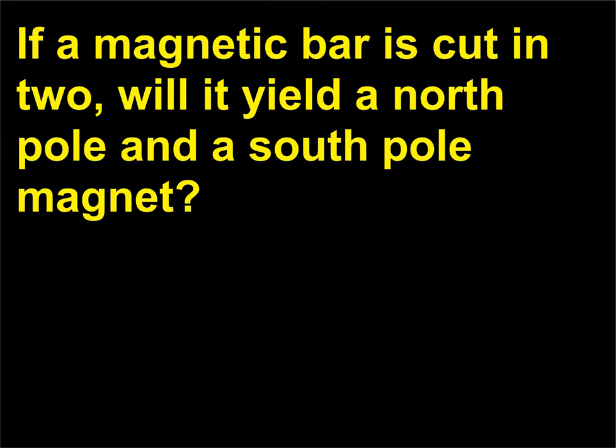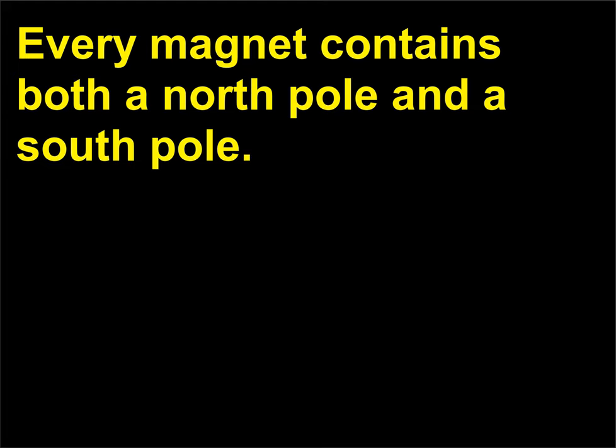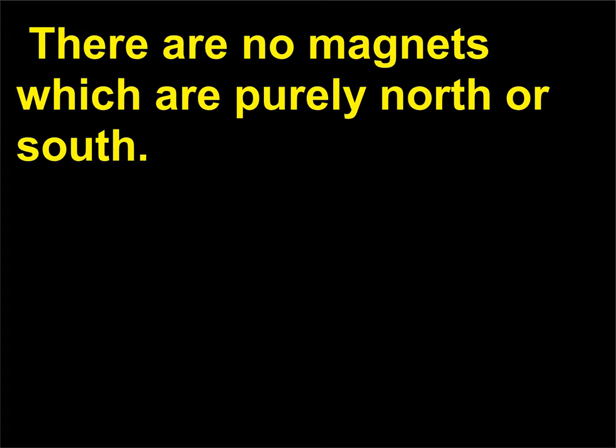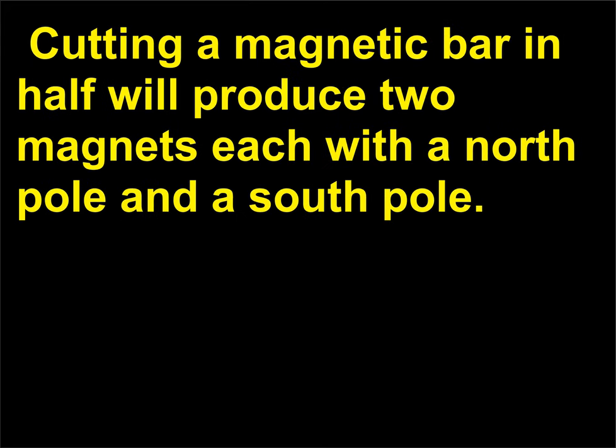If a magnetic bar is cut in two, will it yield a north pole and a south pole magnet? Every magnet contains both a north pole and a south pole. There are no magnets which are purely north or south. Cutting a magnetic bar in half will produce two magnets, each with a north pole and a south pole.